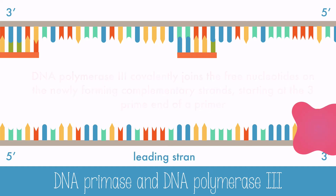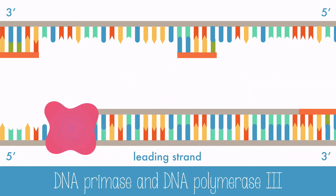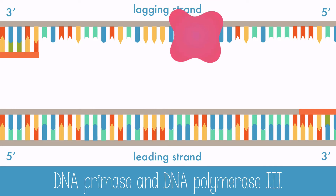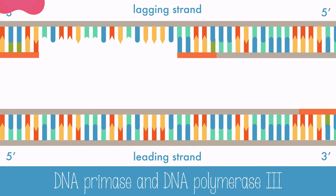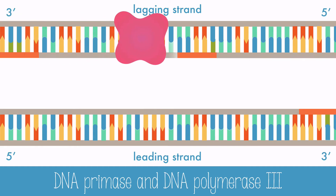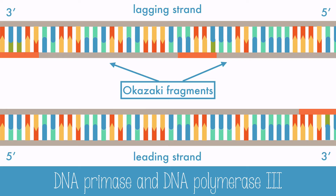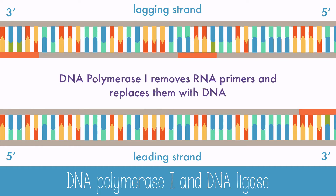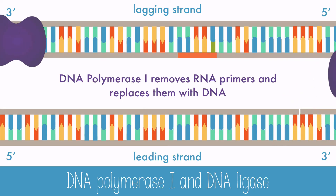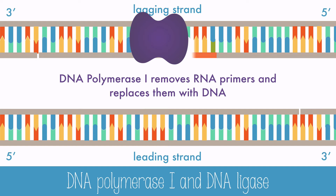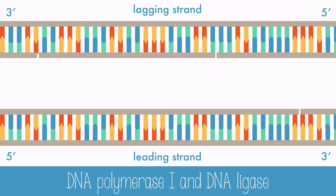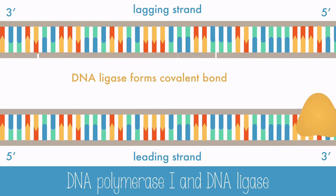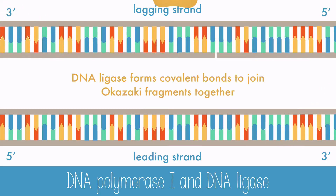DNA polymerase 3 can work continuously on the leading strand, but it works in discontinuous sections called Okazaki fragments on the lagging strand. Now the last thing to fix on the DNA are those RNA primers that were placed at the beginning by DNA primase. DNA polymerase 1 removes RNA primers and replaces them with DNA. There are still unjoined nucleotides between the Okazaki fragments, so DNA ligase will covalently join the fragments together. And now we have two identical strands of DNA.